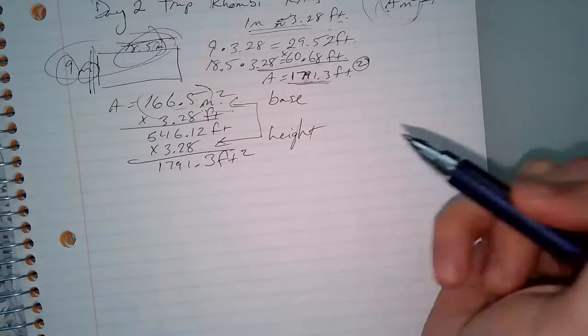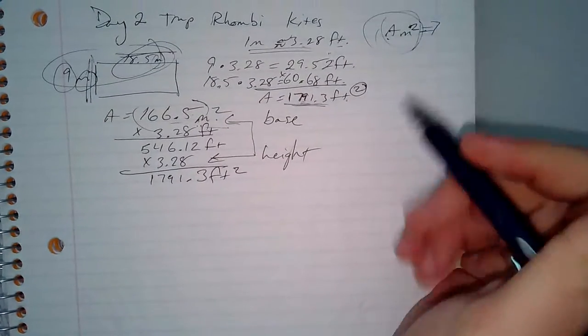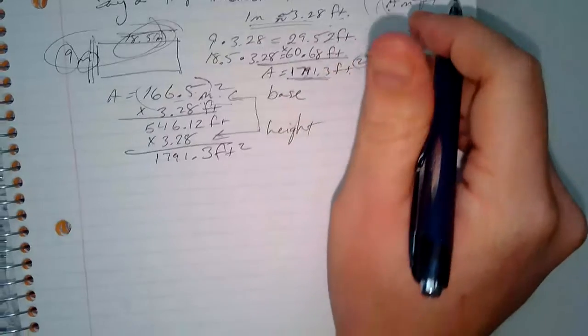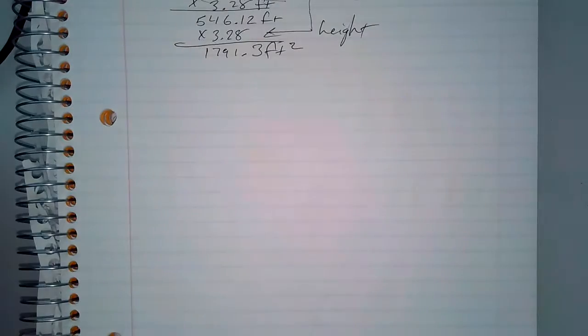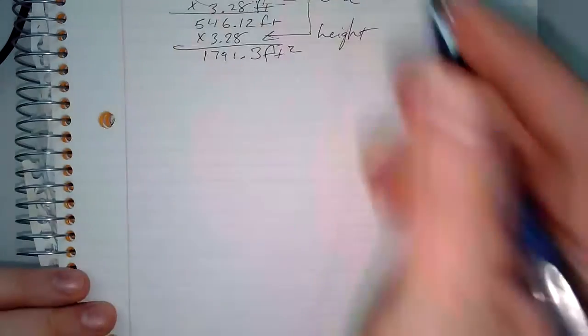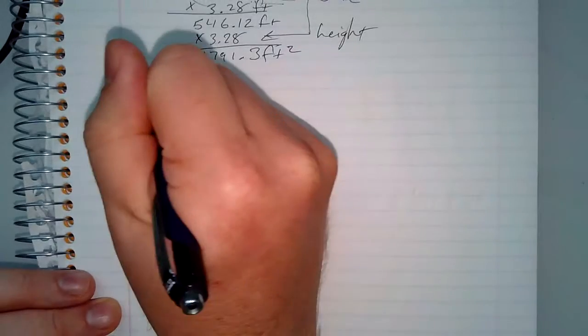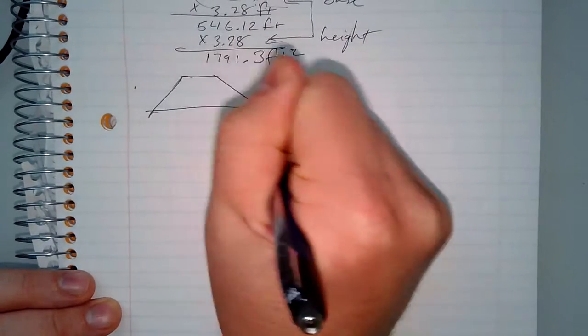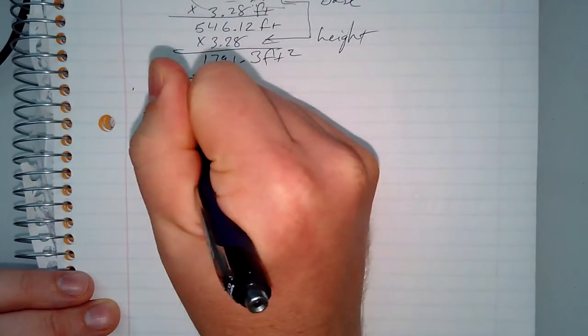That is the most important portion of this entire lesson. Now, on to trapezoids. A trapezoid is a quadrilateral with exactly one pair of parallel sides called bases. The height of a trapezoid is the perpendicular distance between those bases. The area of a trapezoid is one-half times the height times base one plus base two.